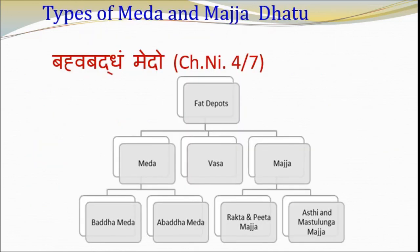While describing the Dushya of Prameha, Charak has mentioned that Medha is of two types: Baddha and Abaddha. Baddha Medha can be considered as visceral adipocytes situated in the abdomen and small bones, while Abaddha Medha can be considered as circulating lipids. Majja Dhatu has also been classified as Asthi-Gata Majja and Mastaka-Gata Majja, as well as Rakta Majja and Peeta Majja.